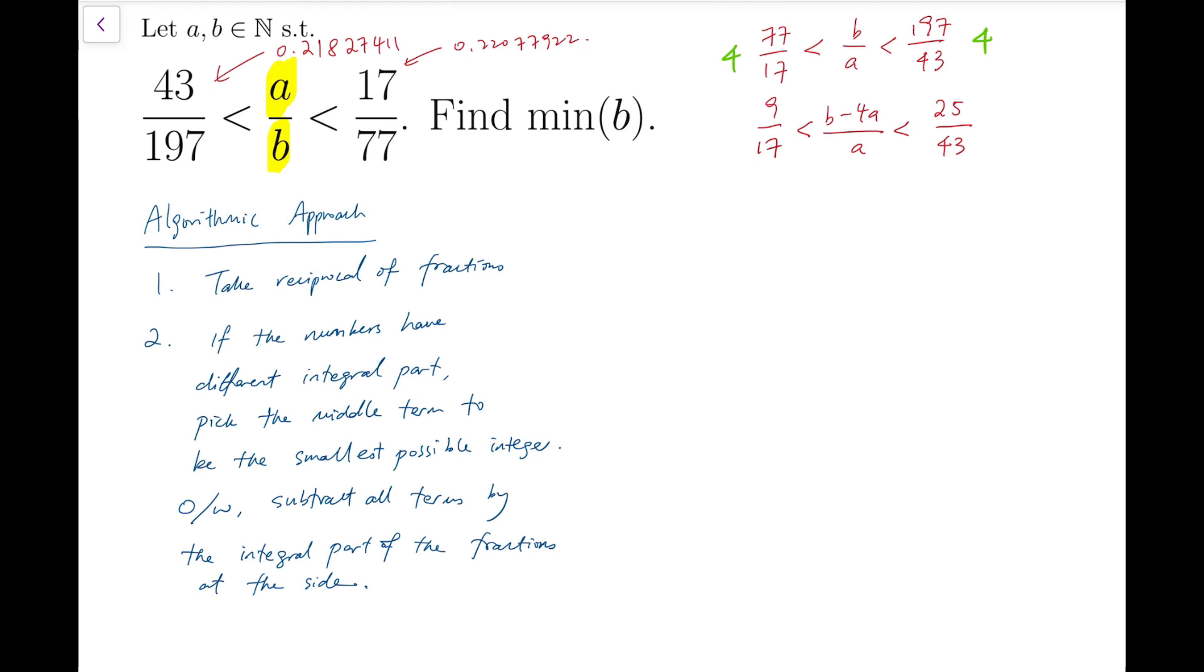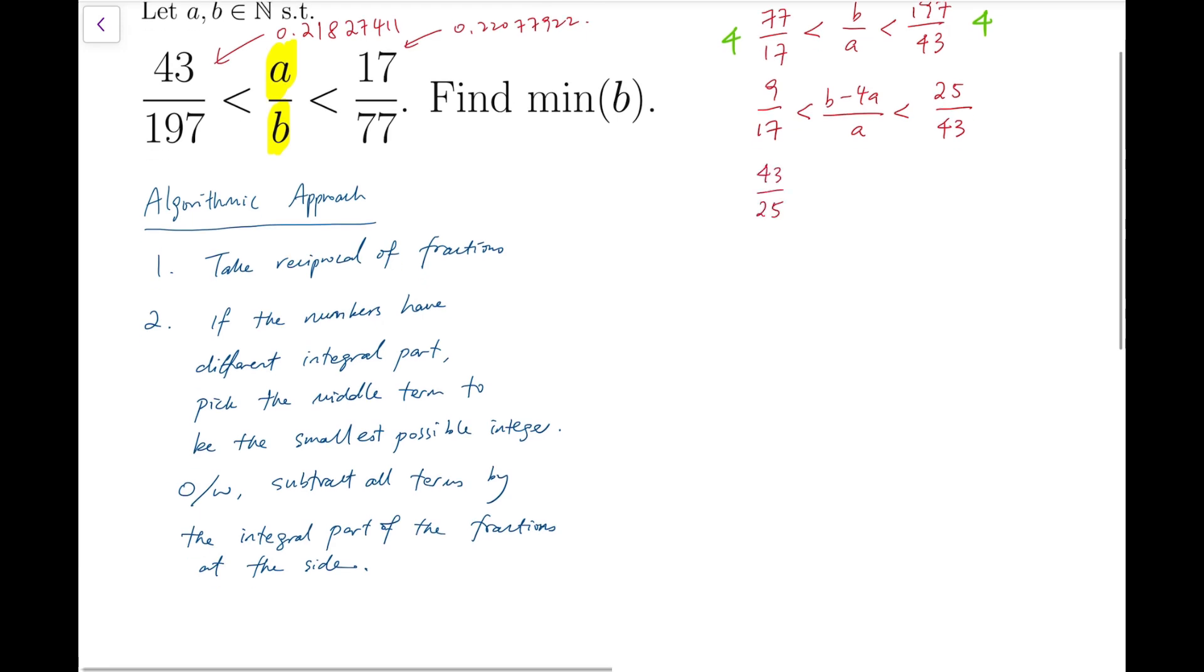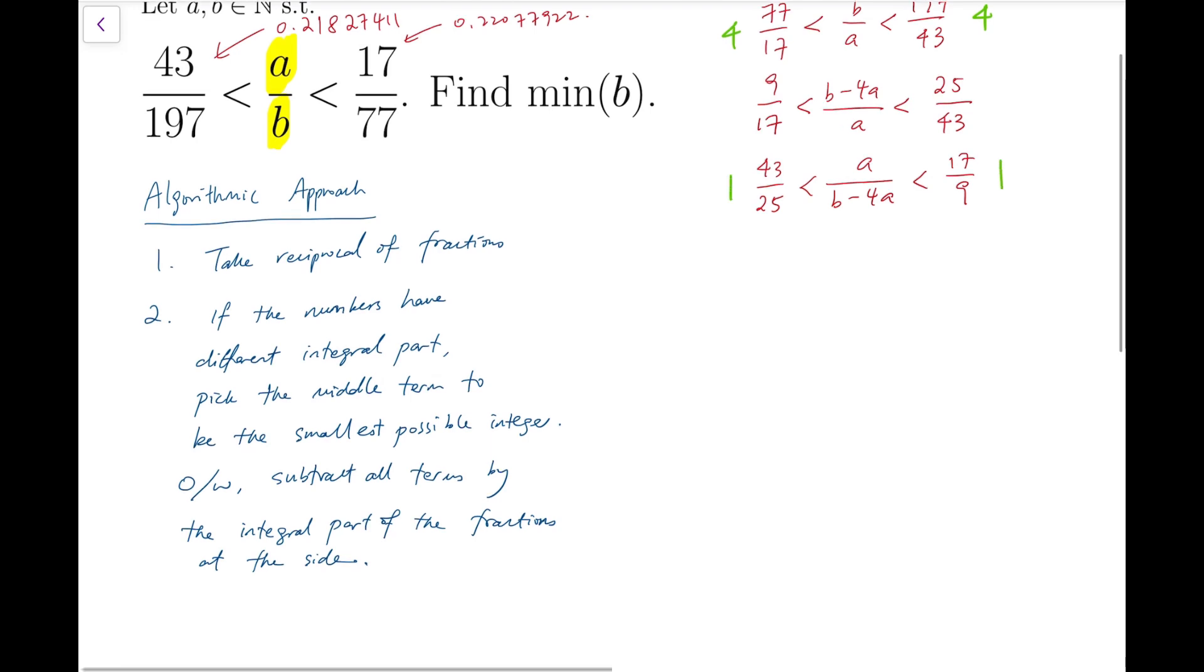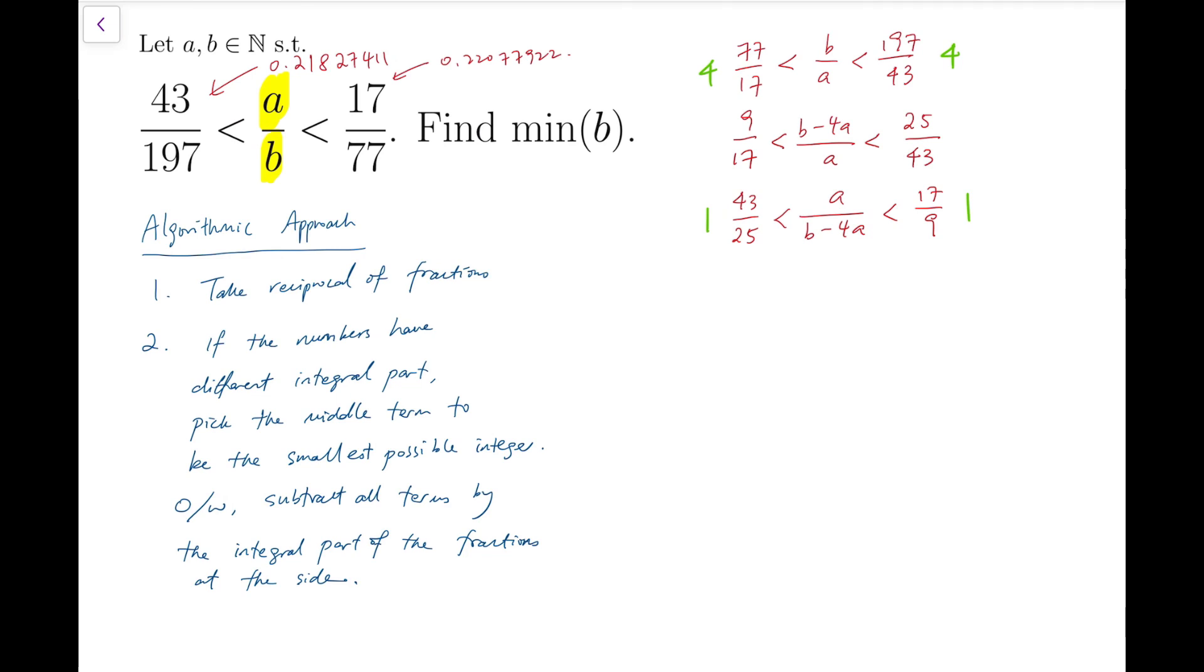Next, we take reciprocal again. We return to step 1. So the smallest fraction becomes 43 over 25. The largest is now 17 over 9. And then the fraction in the middle is a over b minus 4a. Now, the integral parts of the two fractions on the side are both 1. So we subtract all fractions by 1. These are the smallest and the largest fractions. Then the middle term will become a minus bracket b minus 4a over b minus 4a. So we simplify that. And we'll have 5a minus b over b minus 4a.